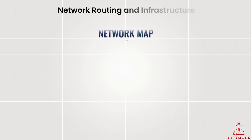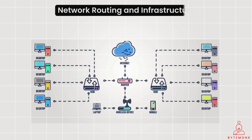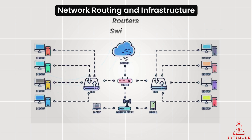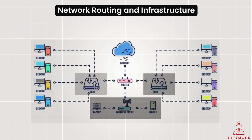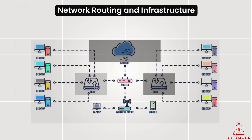In networking, heartbeat-like messages — often called keep-alives or hello packets — are exchanged between neighboring routers or switches. These messages confirm the liveliness of network links and neighboring devices. If a router stops receiving keep-alives from a neighbor, it can consider the link or neighbor as down and reroute traffic accordingly. This is crucial for maintaining network stability and routing efficiency.